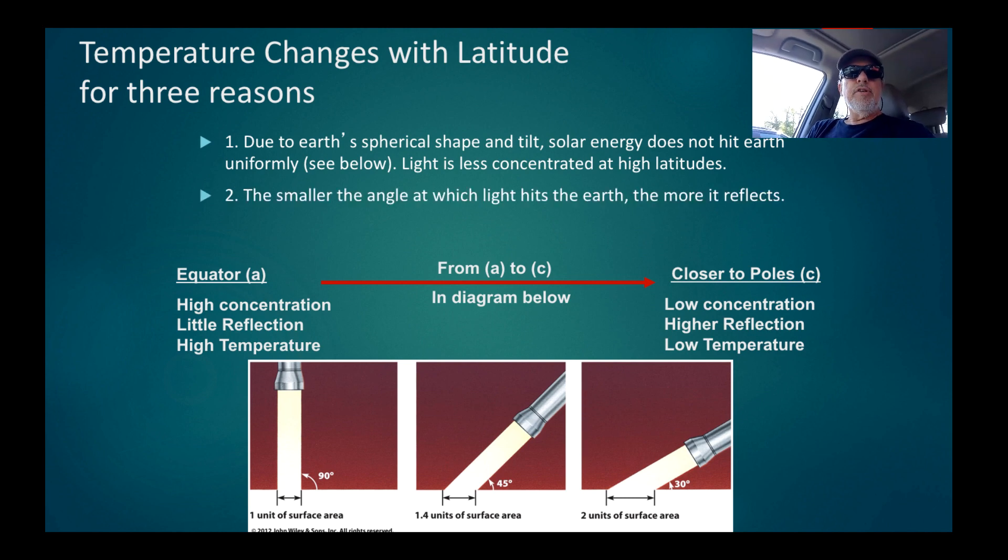Reason number two: the smaller the angle at which the light hits the Earth, the more it reflects. This is somebody's law in physics. If you took ninth grade physics already, I think you'll remember, I think this is called Snell's Law. The smaller the angle of incidence, the more reflectance. There's going to be more reflectance at higher latitudes than at the equator, where there'll be more absorbance. Therefore, there'll be higher temperature gain at the equator.